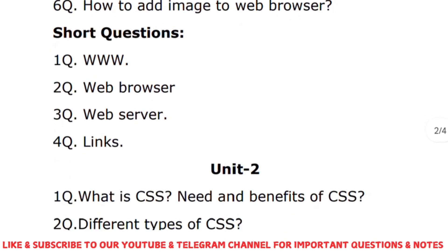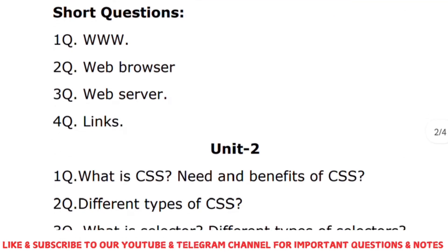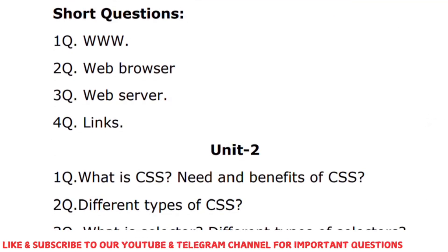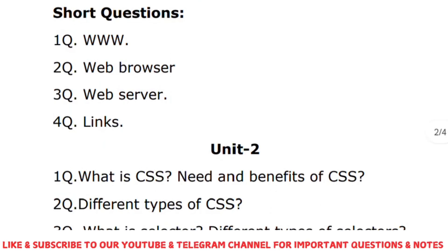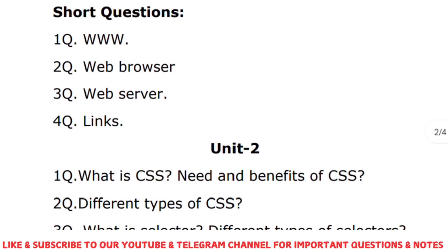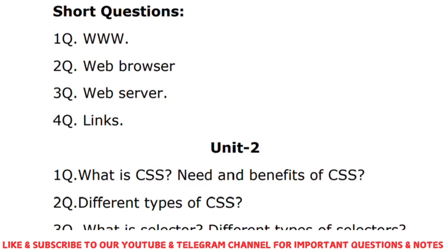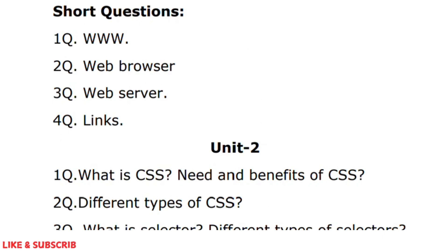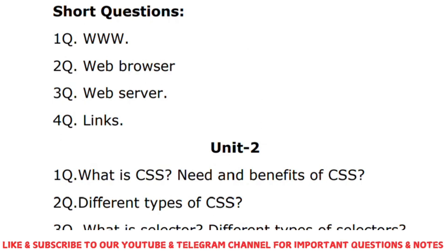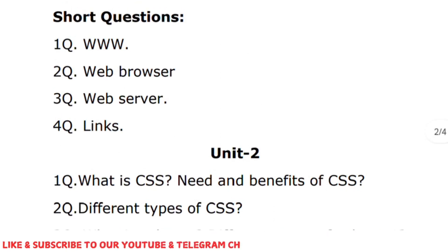When it comes to unit two: what is CSS, the need for CSS, and the benefits of CSS. CSS stands for Cascading Style Sheets. We use CSS whenever we want to style any HTML page. The benefit of CSS is that you can separate HTML code from CSS code, and whatever changes you make in the CSS file will be reflected in all HTML programs using that CSS file.